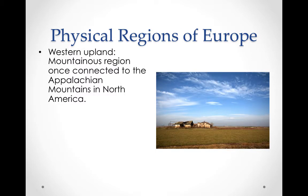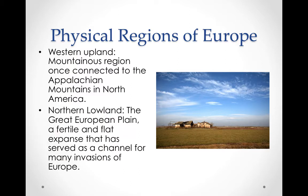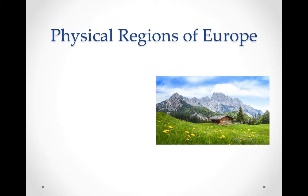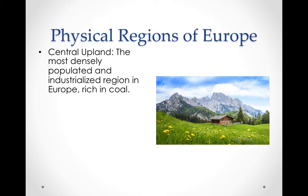Physical regions of Europe include the Western Upland, a mountainous region once connected to the Appalachian Mountains in North America, found in the Scandinavian areas. The Northern Lowland, or the Great European Plain, is a fertile and flat expanse that has served as a channel for many European invasions — a natural path that invaders have followed. The Central Upland is the most densely populated and industrialized region, rich in coal. Coal got the Industrial Revolution started, and though it's not used as much today, it was the prime mover of industrialization.